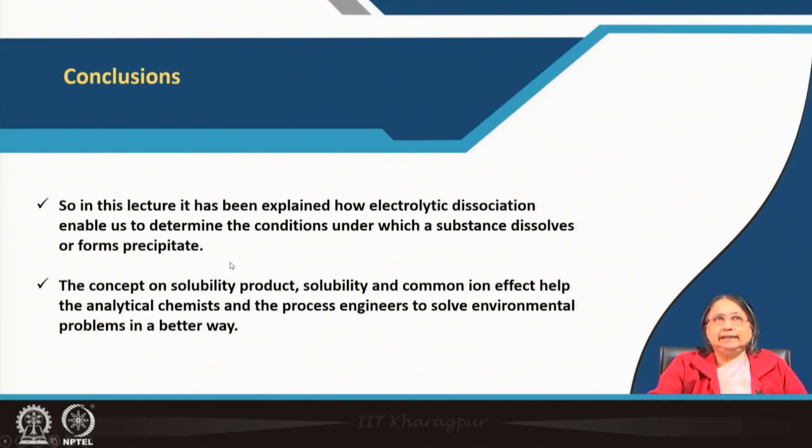In conclusion, this lecture has explained how electrolytic dissociation enables us to determine the conditions under which a substance dissolves or forms a precipitate. Ksp is the key factor, and while Ksp is constant at a given temperature, solubility can be varied by adding a common ion. Understanding solubility product, solubility, and common ion effect is essential in chemical equilibrium, process engineering, environmental engineering, and analytical chemistry. Thank you.